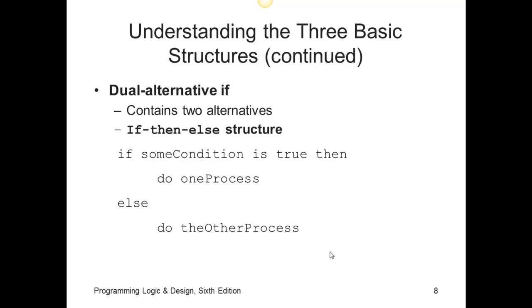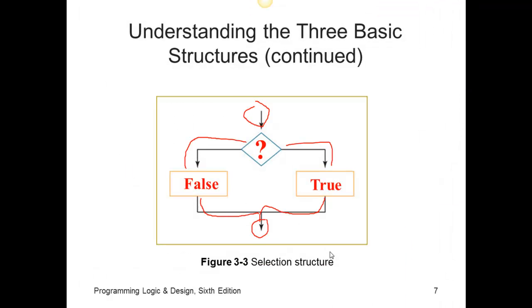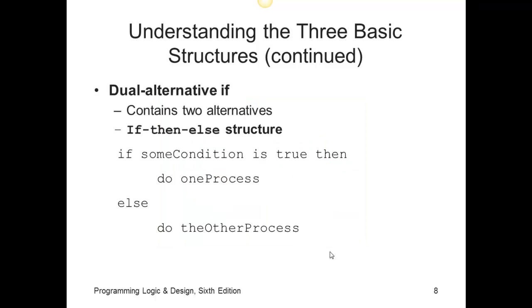Here's a pseudocode example of a dual alternative if. And again, what we saw on the previous slide here, dual alternative if. Depending on the question, you take either this route or the dual route, the alternate route. True versus false. Dual alternative if contains two alternatives. If some condition is true, then do one thing, else do the other. So dual alternative, you have this alternative or this alternative.